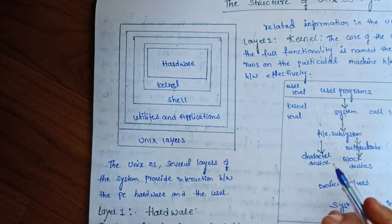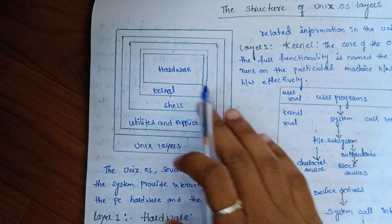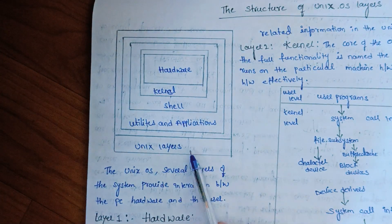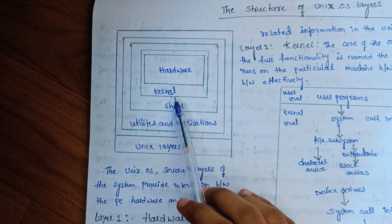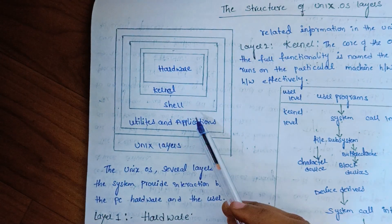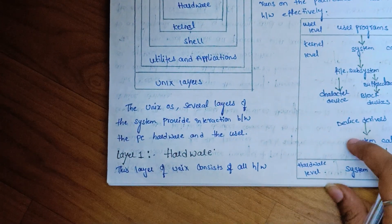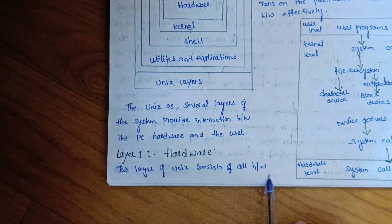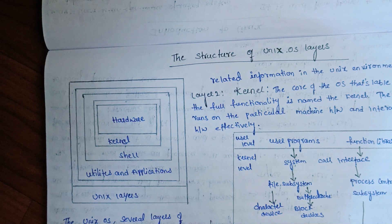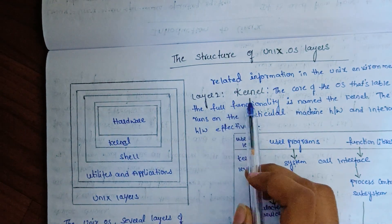We use the structure of Unix to manage the interaction between PC hardware and the user. The first layer is the hardware layer. This layer of Unix consists of all hardware-related information, and this is the first hardware-level layer.